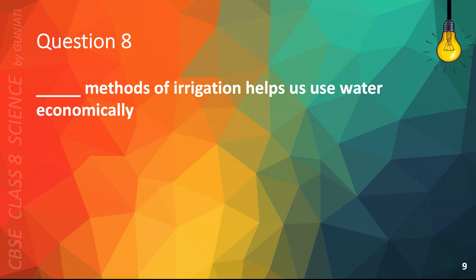Question 8. Blank methods of irrigation help us use water economically. A. Traditional, B. Modern, C. Pulley, or D. Pump. The correct answer is B. Modern.